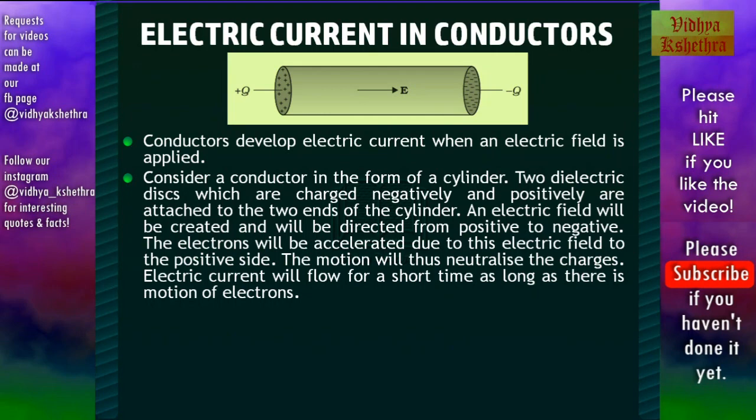An electric field will be created and will be directed from positive to negative. The electrons will be accelerated due to this electric field to the positive side. The motion will thus neutralize the charges. Electric current will flow for a short time as long as there is motion of electrons.